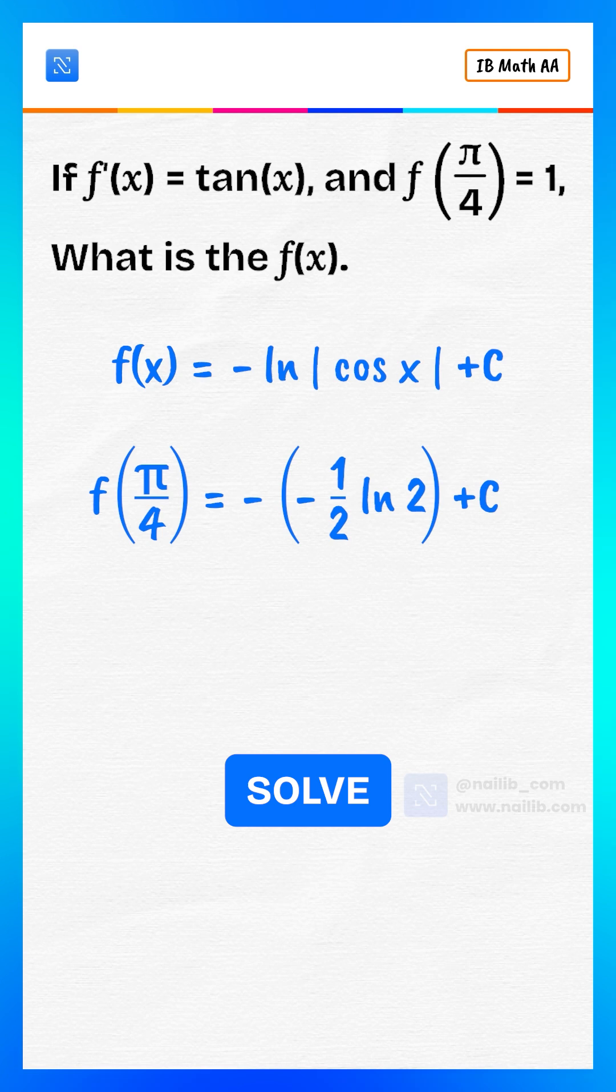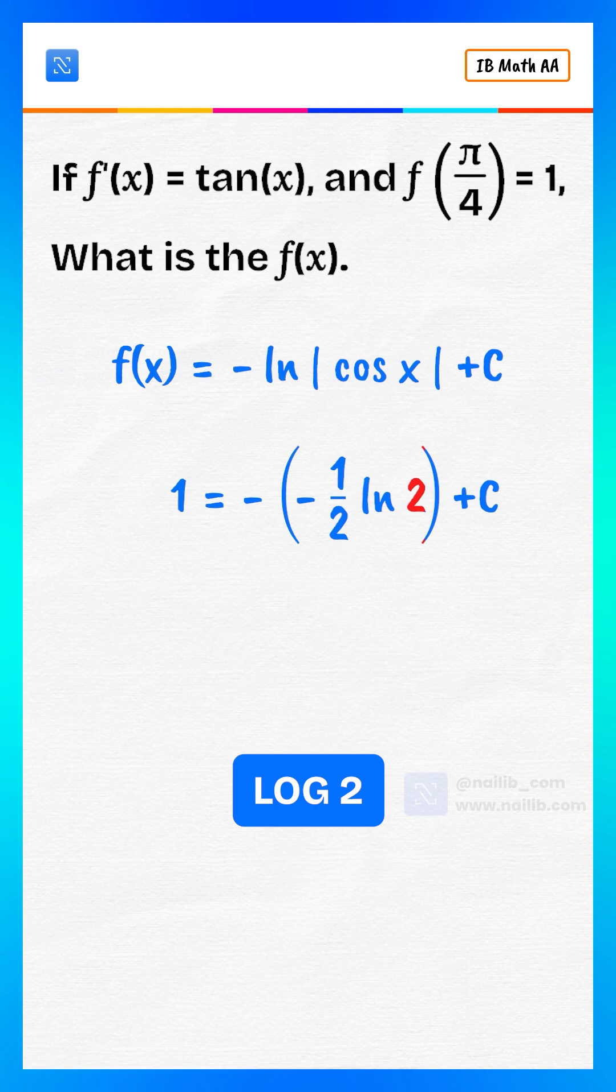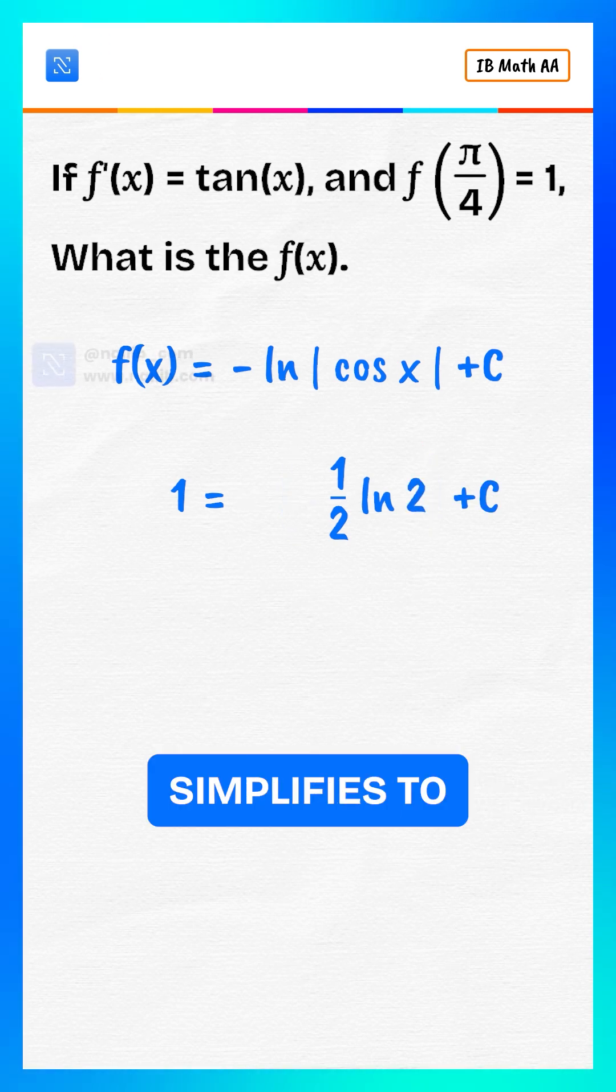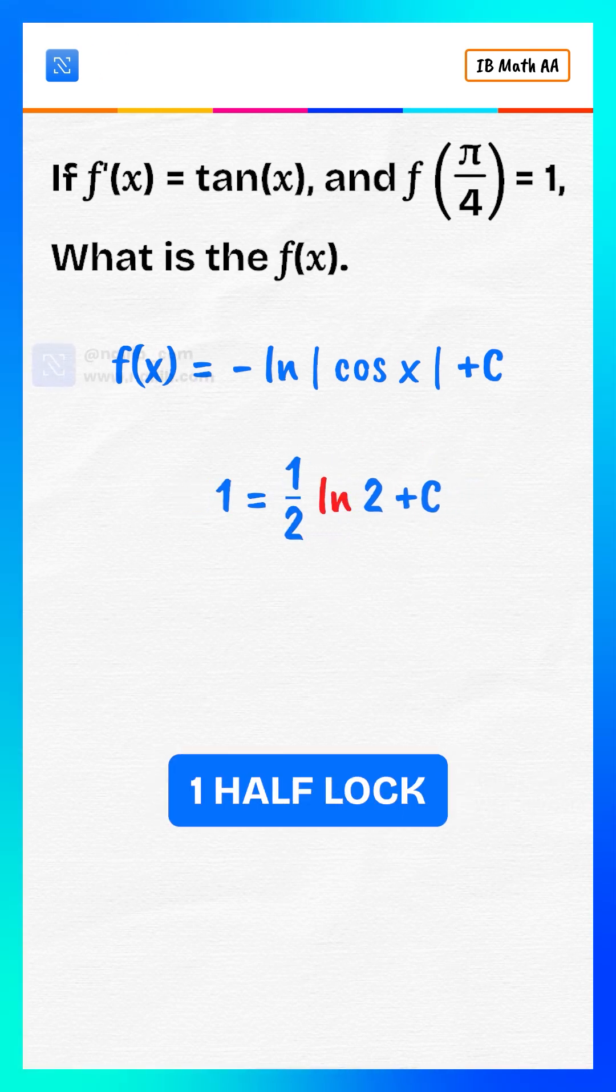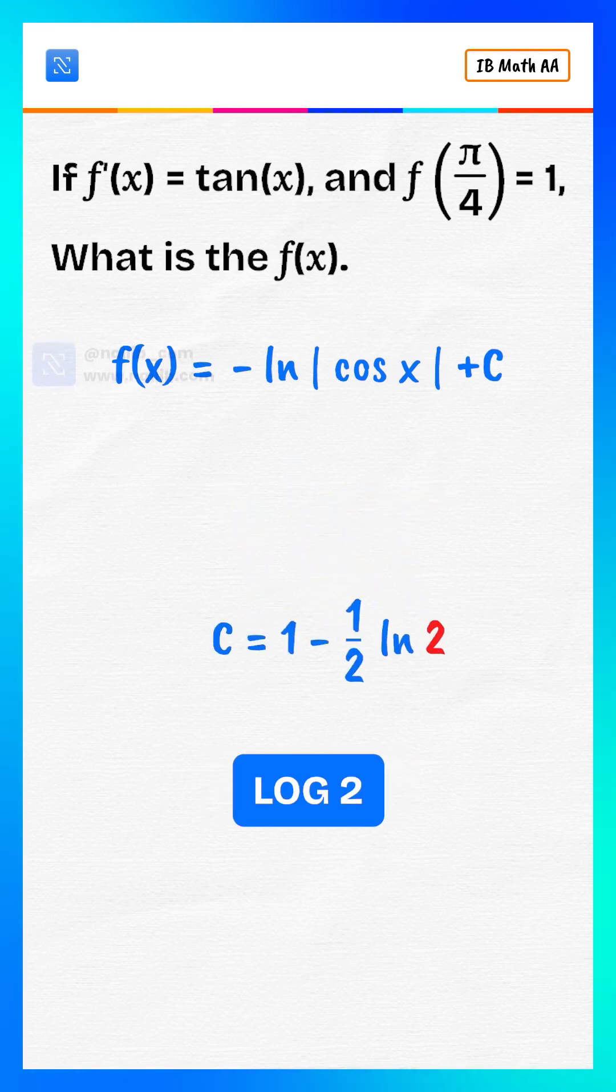So we now solve: f of pi over 4 is 1 equals negative of negative 1 half log 2 plus c. That simplifies to 1 equals 1 half log 2 plus c. So c is 1 minus 1 half log 2.